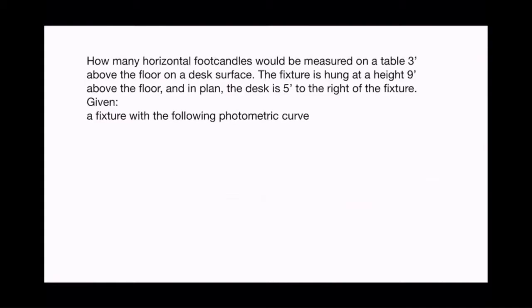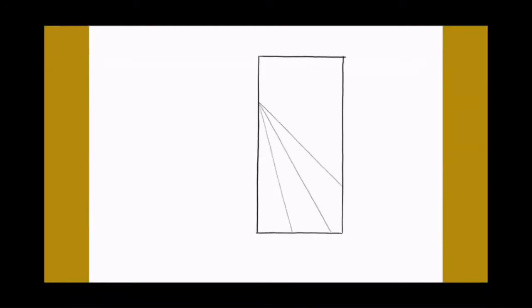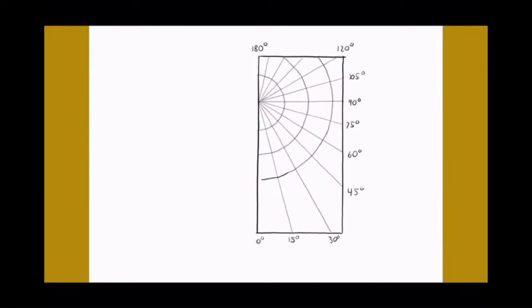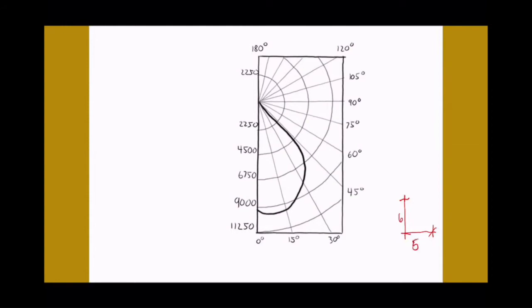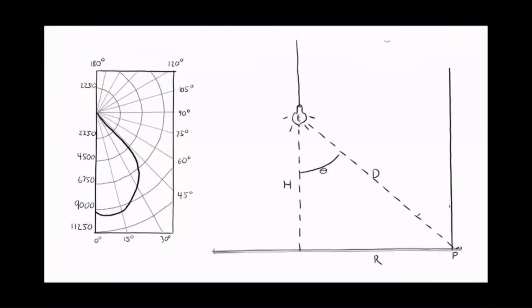Last problem: how many horizontal foot candles would be measured on a table three feet above the floor? Same geometry — fixture at nine feet, desk five feet to the right — but now it's a fixture, not a bare bulb. There's something on top of the lamp: a luminaire that redirects and shapes the angle of emitted light. We're given a photometric curve for this source instead of a simple candle power value.